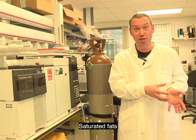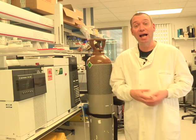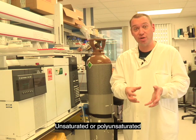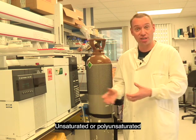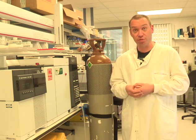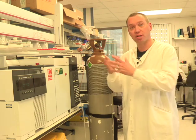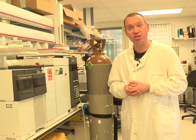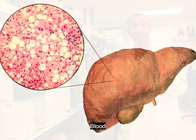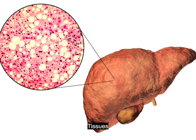We may have heard of saturated fats, which are bad for us, and unsaturated or polyunsaturated fats that are good for us. We use this machine to measure how much of the saturated bad fats and the good polyunsaturated fats we have in our blood and even in our tissues like our fat tissue or our liver tissue.